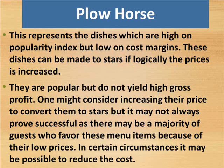Plow Horse: This represents the dishes which are high on popularity index but low on contribution margins. These dishes can be made into stars if the price is logically increased. They are popular but do not yield high gross profit. One might consider increasing their price to convert them to stars, but it may not always prove successful as there may be a majority of guests who favor these items because of their low prices. In certain circumstances it may be possible to reduce the cost.